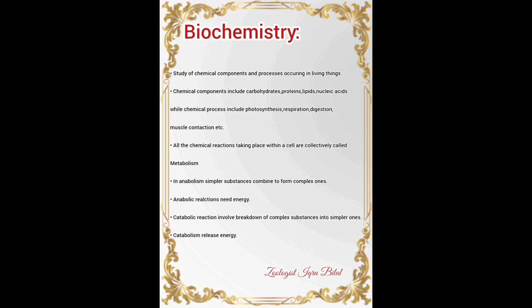All the chemical reactions taking place within a cell are collectively called metabolism. Metabolism is of two types: anabolism and catabolism. In anabolism, simpler substances combine to form complex ones — for example, glucose combines to form starch or cellulose — and anabolic reactions absorb energy. Catabolic reactions involve breakdown of complex substances into simpler ones, such as carbohydrates into glucose and proteins into amino acids, and catabolic reactions release energy.